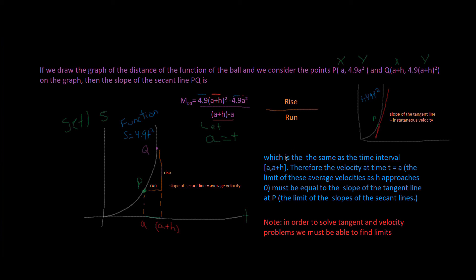So, what's happening is, is the same as the time interval, A to A plus H. Remember, I said that's our time interval. Therefore, the velocity at the time T equals A is the limit of these average velocities as H approaches zero. So, as H goes to A, it's approaching zero. H is approaching zero. It must be equal to the slope of the tangent line at P, the limit of the slopes of the secant line. And so, this is shown over here.